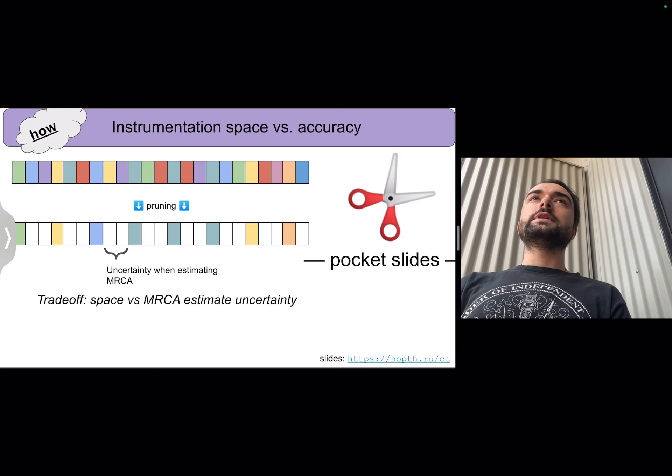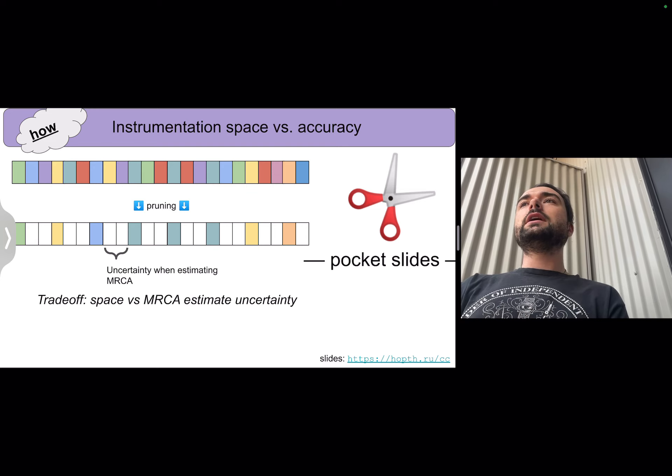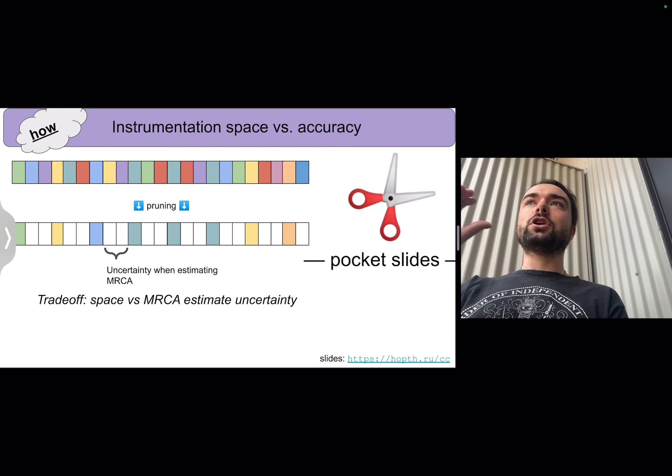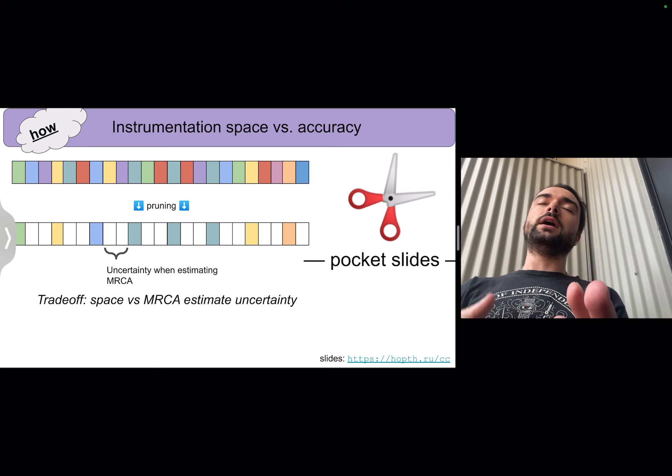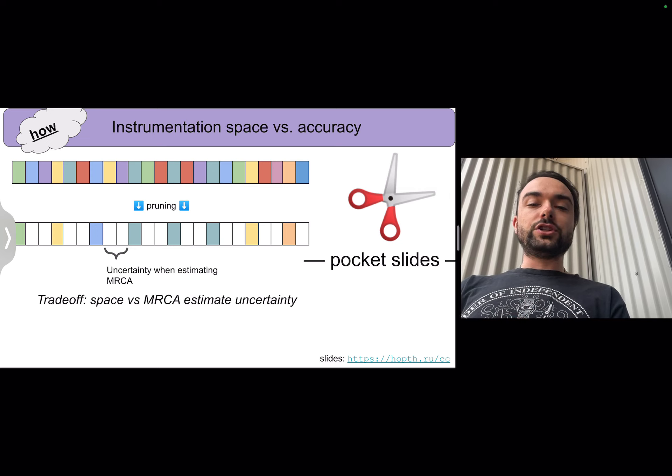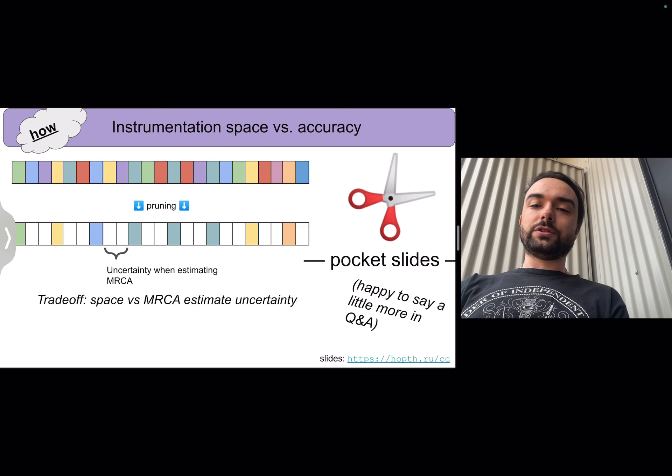There's a lot more to this pruning process. This is really the subtle and interesting part of the methodology. There are different trade-offs you can make to have constant size annotations, annotations that grow logarithmically with the number of generations that have elapsed. But we're going to gloss over that a little bit in the interest of time.